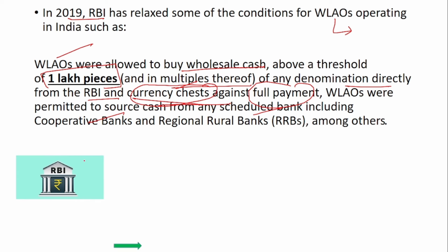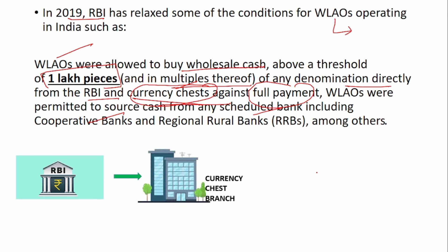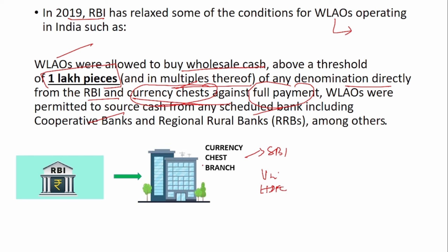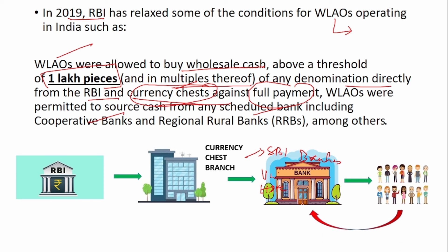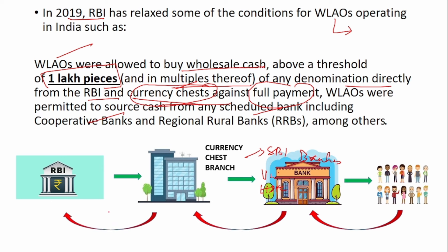White label ATM operators are allowed to buy wholesale cash above a threshold of one lakh pieces and in multiples thereof of any denomination directly from RBI and currency chests against full payment. They can also collect cash from scheduled banks including cooperative banks and RRBs. A currency chest branch is an intermediary: money flows from RBI to currency chest branches, then to individual bank branches, then to the public — and in reverse when the public deposits money.